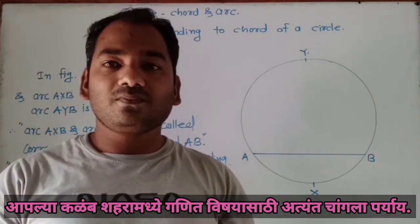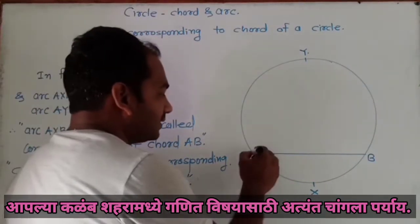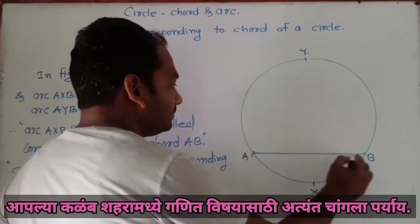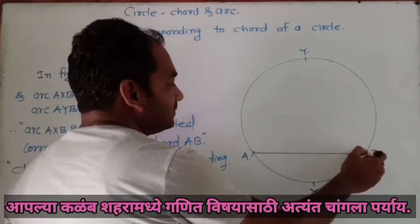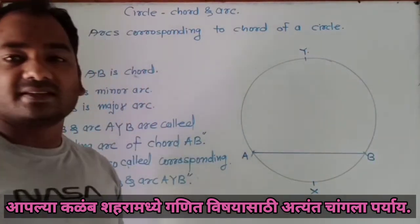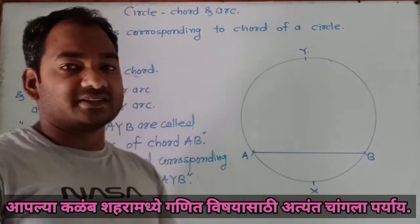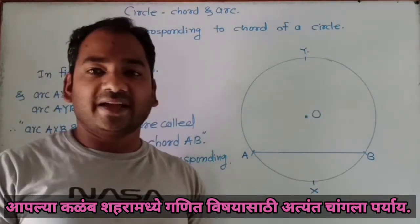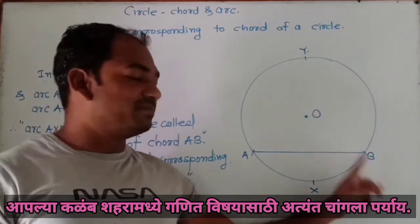We all know what a chord is in a circle. See in the figure here — segment AB is a chord of a circle. Now due to this chord we get two arcs: arc AYB is a major arc and arc AXB is a minor arc. O is the centre of the circle. So arc AYB is the major arc and arc AXB is the minor arc.